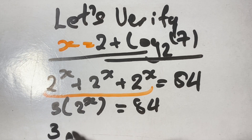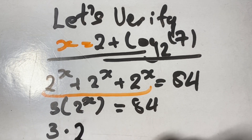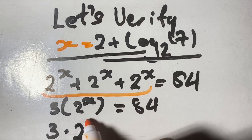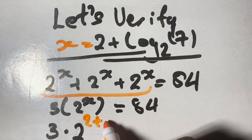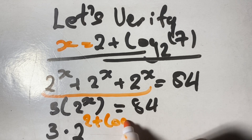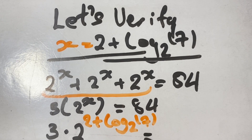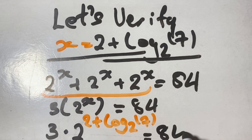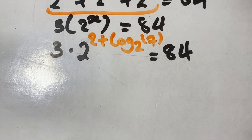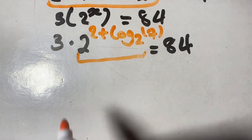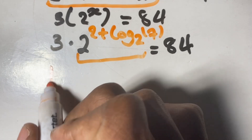So that gives us 3 times 2 to the power of 2 plus log base 2 of 7, is equal to 84. Now let's look at 2 to the power of 2 plus log base 2 of 7.